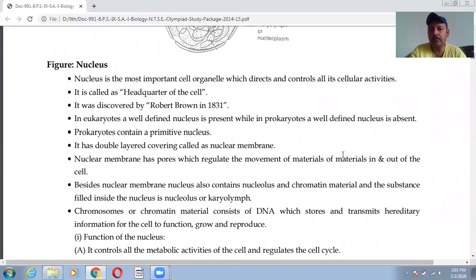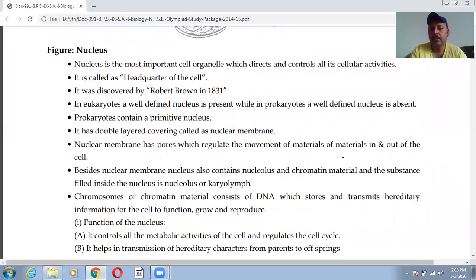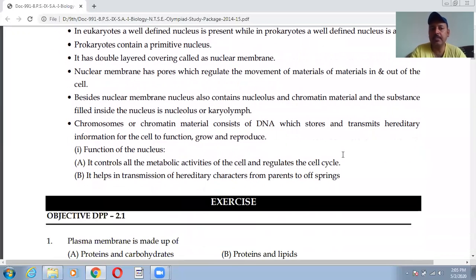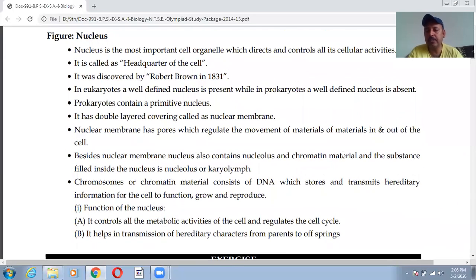It has double layered covering called as nuclear membrane. Nuclear membrane has pores which regulate the movement of materials. Besides nuclear membrane, nucleus also contains nucleolus, chromatin material, and the substance filled in the nucleus is nucleoplasm. The chromosomes or chromatin material consists of DNA which inherited the characters from the parents to their young generation.